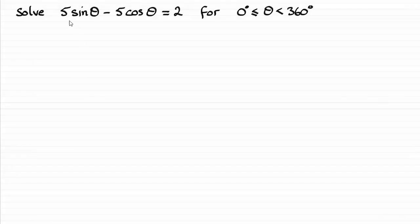We've got to solve this equation: 5sinθ - 5cosθ = 2 in this given range for θ. Now there's several ways that you can do this equation, and one of the most popular ways, not that I would encourage it, is to use a squaring method to basically square both sides of this equation.